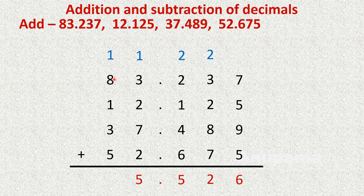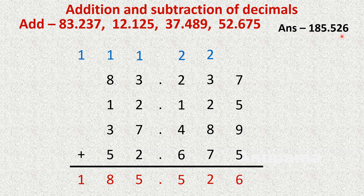Tens column: 1 plus 8 is 9, plus 1 is 10, plus 3 is 13, plus 5 is 18. We write 8 here and carry 1. Because there is no number at the next place, we just write the 1. So our answer is 185.526.